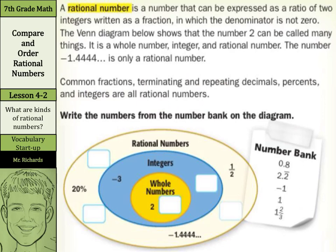As we go to put these numbers in here, we have our number bank on the right side. If we look at 0.8, well, 0.8 is not a whole number and it's not an integer, so it's just going to be a rational number. 2.2 with the 2 repeating, negative 1 is an integer, 1 is a whole number, and 1 and 2 thirds is an example of a rational number.